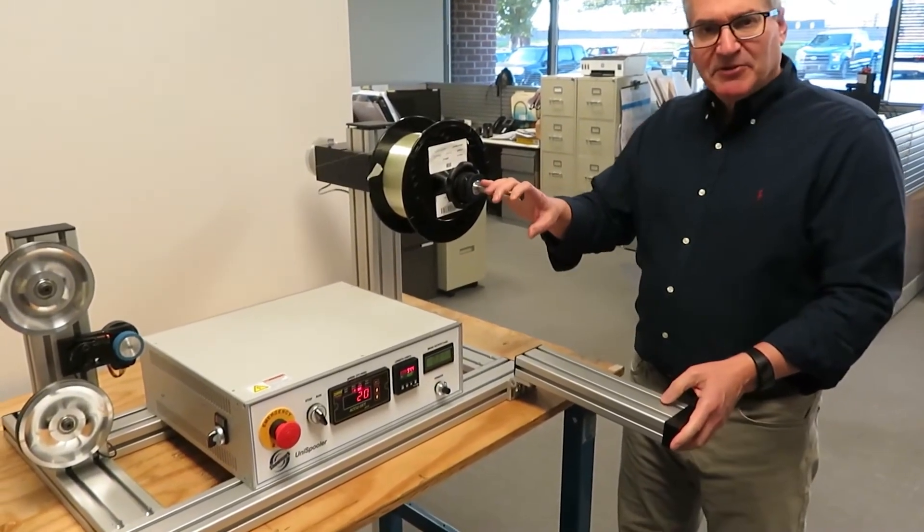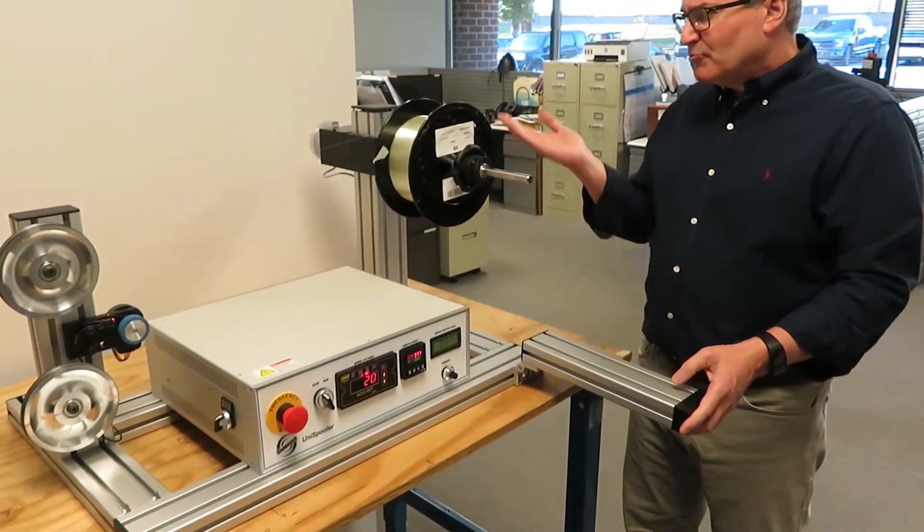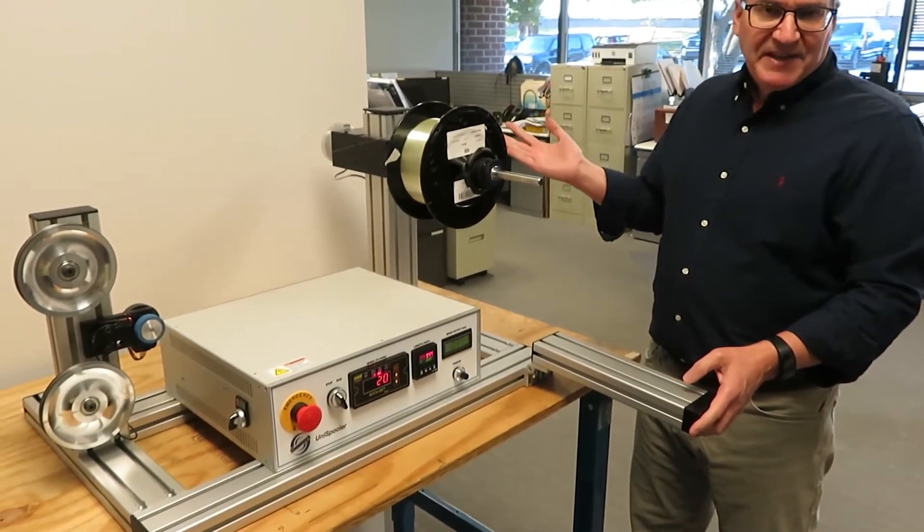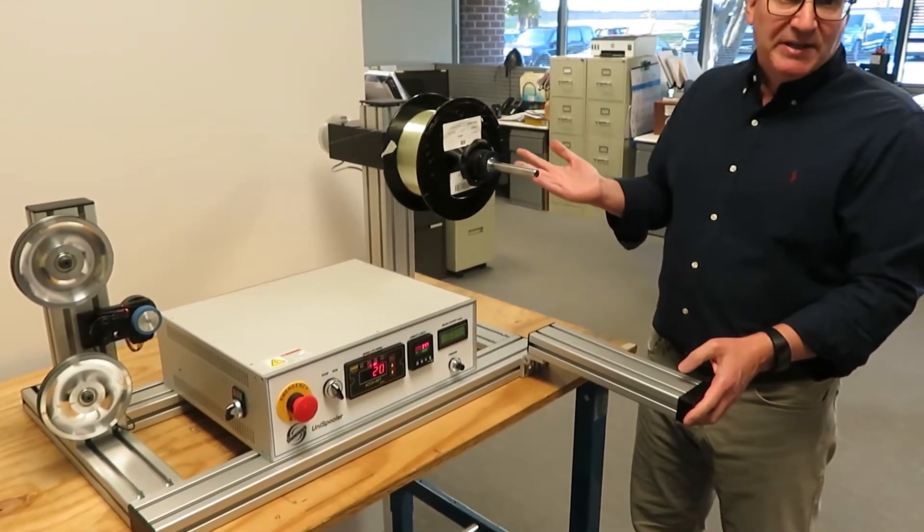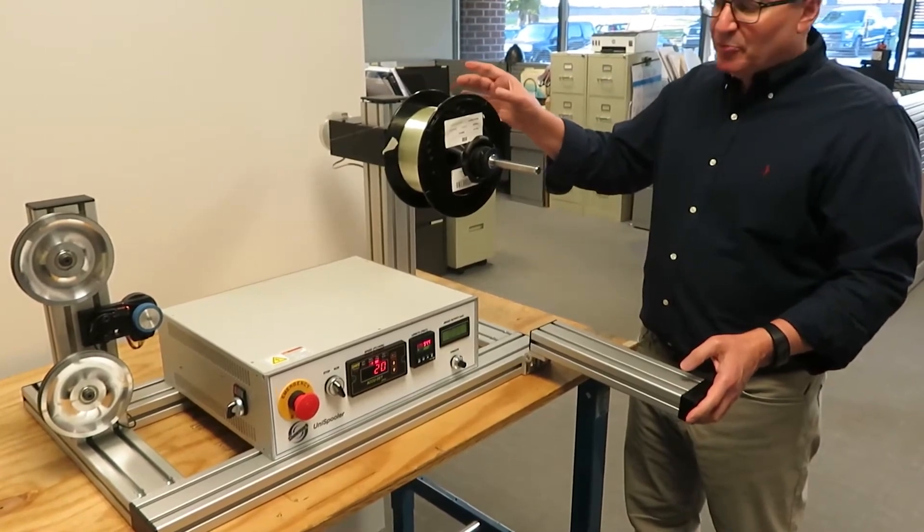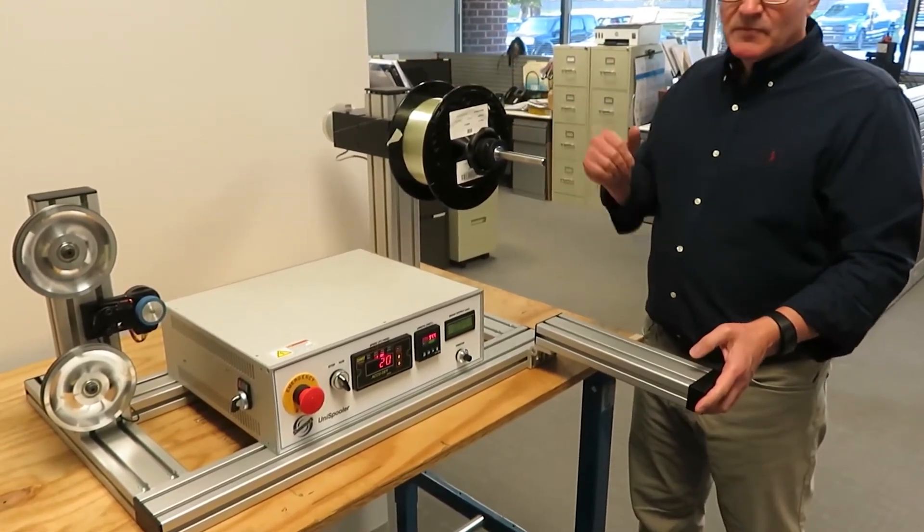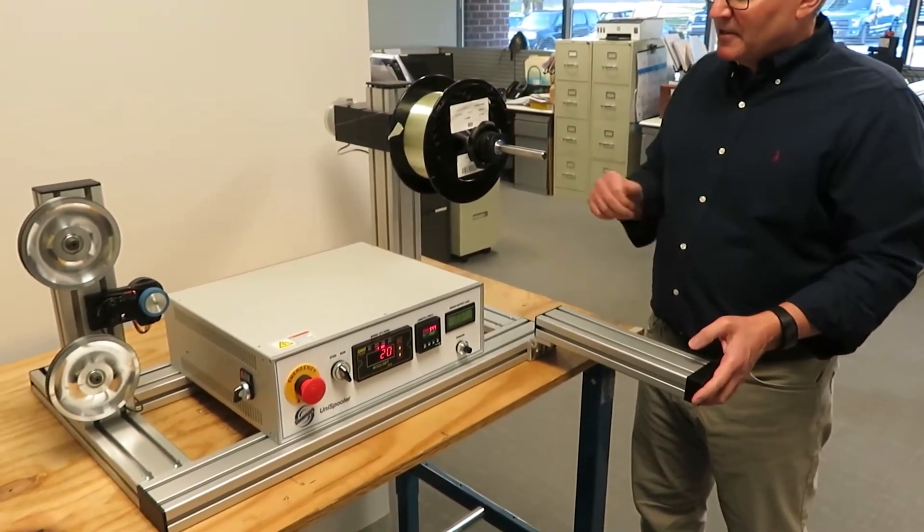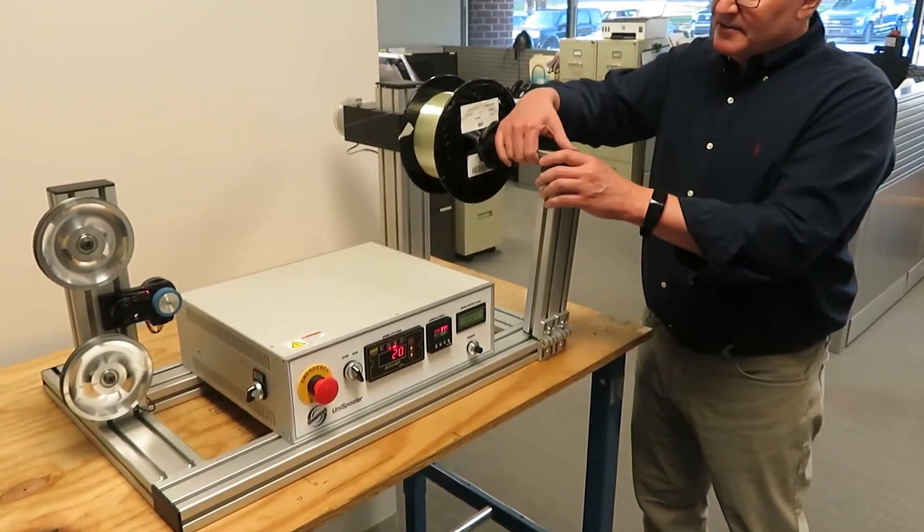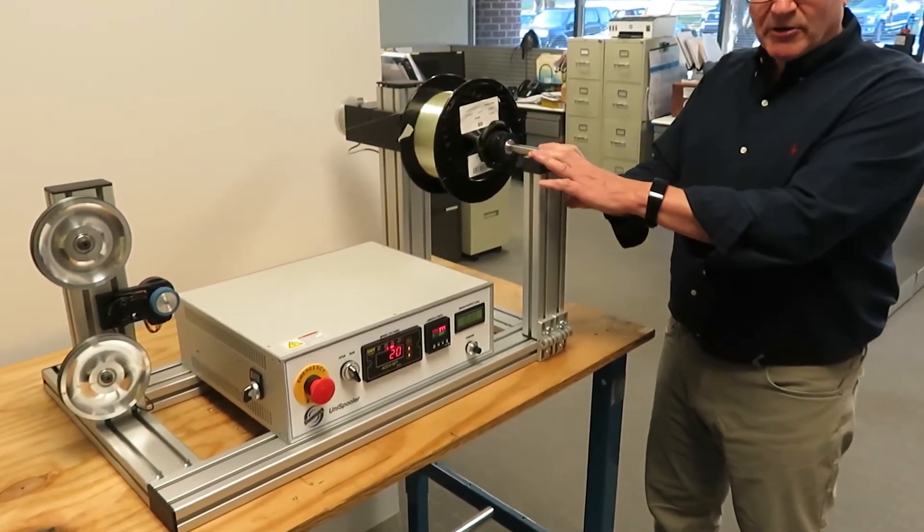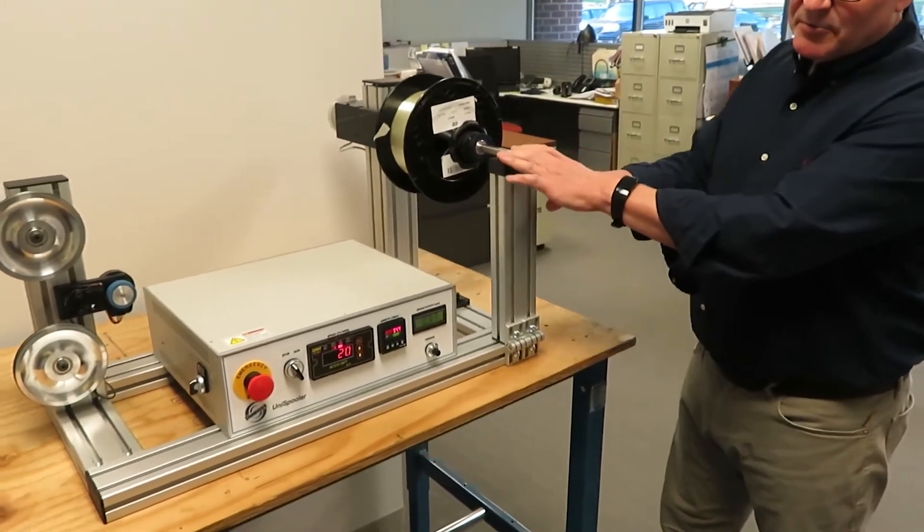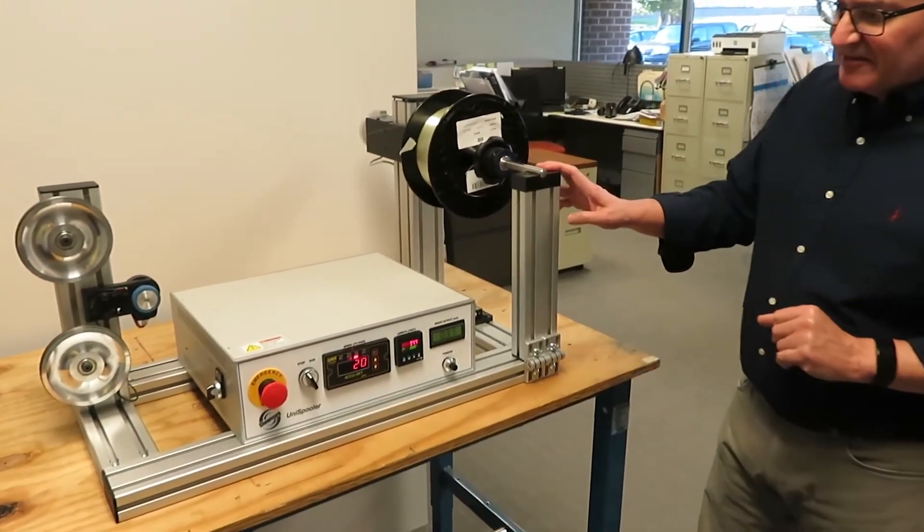These are 15 millimeter shafts on this machine which we normally spec for about a 15 pound load, maybe 20 pounds if it's a narrow spool that can be mounted close to the bearing. But with the tailstock you can put about a 50 pound spool on there. We've got that on both the payoff and the take-up sides of the machine.